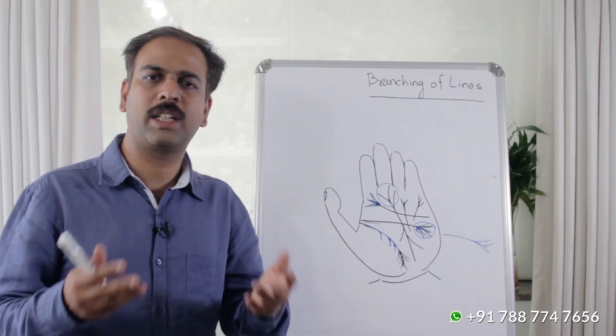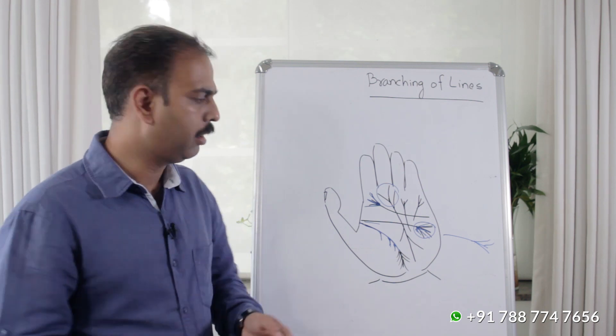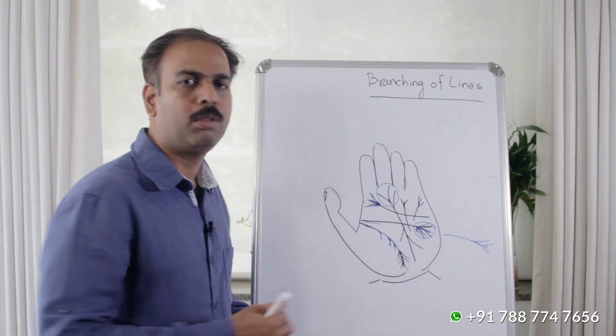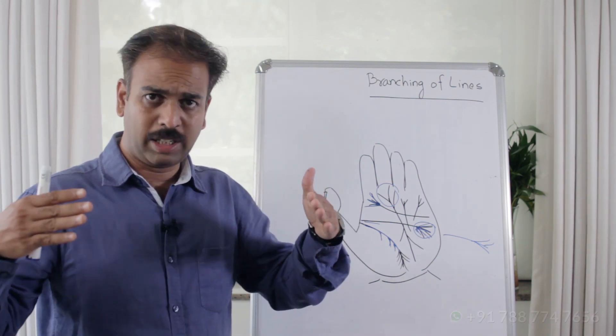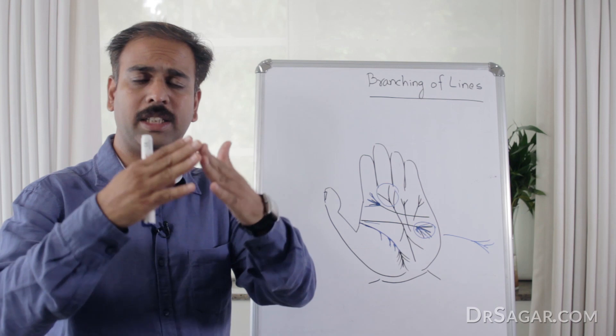The fate line shows two types of branches. We will not mention downward branches, but rather the joining of other lines. When two or three lines join the fate line,